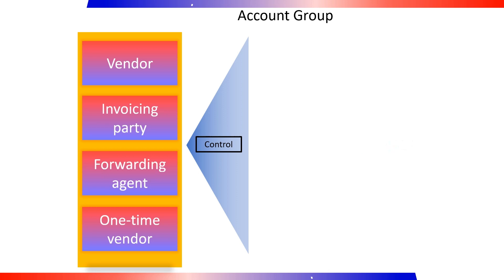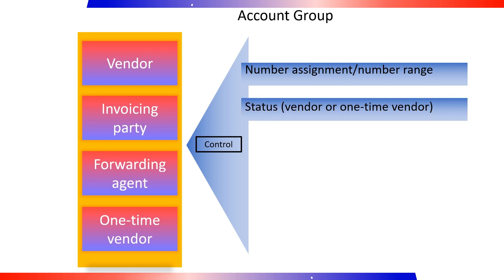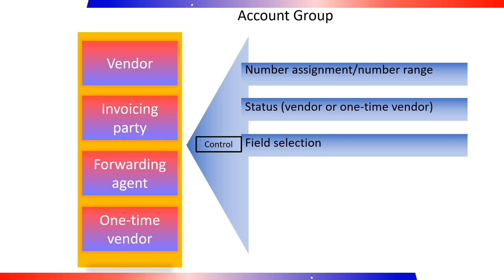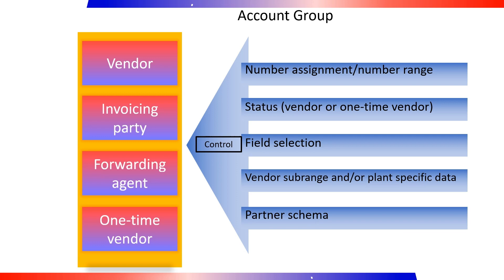When creating a vendor master record, you must decide the account group to which you are assigning this vendor. The account group controls the screens and fields relevant to your business partner that are displayed and enabled for input. The vendor account group determines the type of number assignment, such as internal or external; the vendor status, for example if the vendor is a one-time or permanent vendor; the field selection, such as which fields are ready for input, which fields must be maintained, and which fields are hidden; and the valid partner schema for vendor partner function.